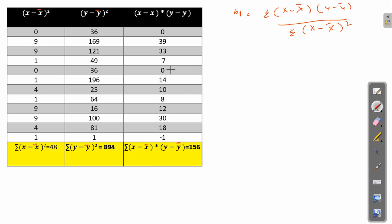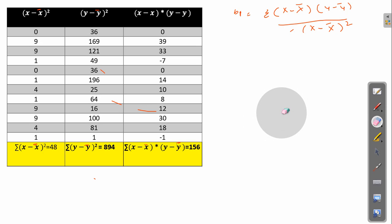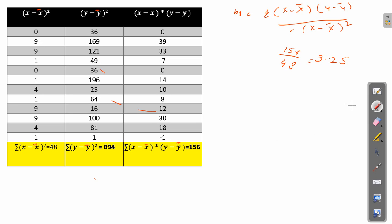The result of summing (x minus x̄)(y minus ȳ) is 156, and the summation of (x minus x̄) squared is 48. So beta 1 equals 156 divided by 48, which equals 3.25. The values can be slightly different depending on the decimal points used in your calculations.